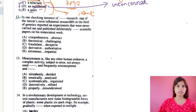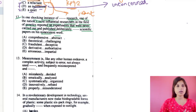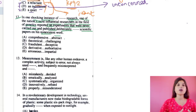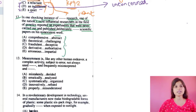Question 12: In one shocking instance of dash research, one of the nation's most influential researchers in the field of genetics reported on experiments that were never carried out and published deliberately dash scientific papers on his non-existent work. They are talking about a shocking event of dash research, where the nation's most influential genetics researcher reported on experiments never carried out but published deliberately so that the scientific papers or research could be carried on.